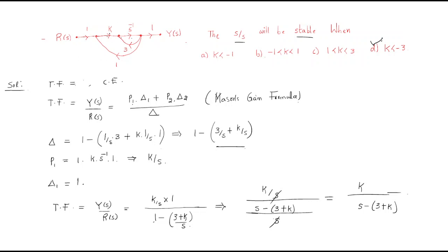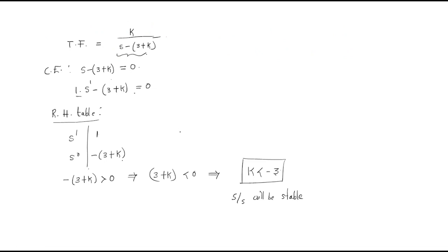The answer is option D: k < -3. This is the general method — when given a signal flow graph, convert it to a transfer function using Mason's gain formula, extract the characteristic equation, build the R-H table, and check stability. I hope everyone understood this session. Thank you.